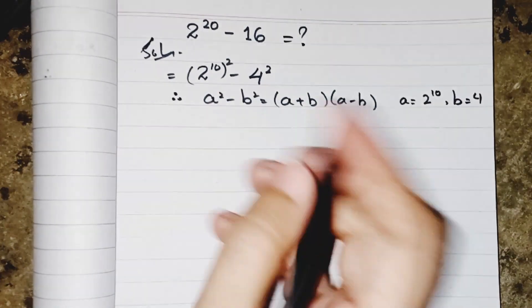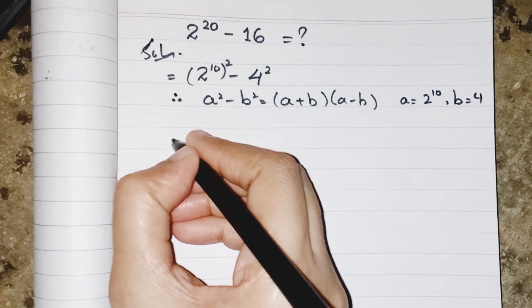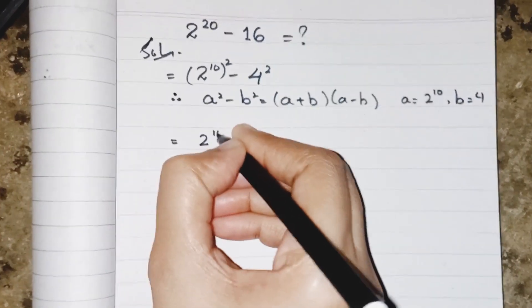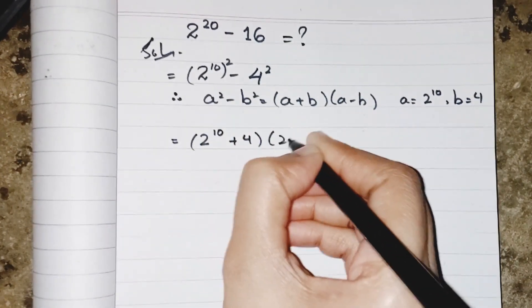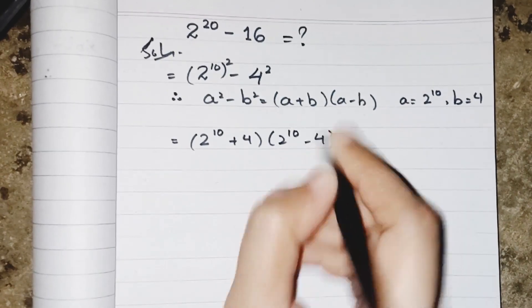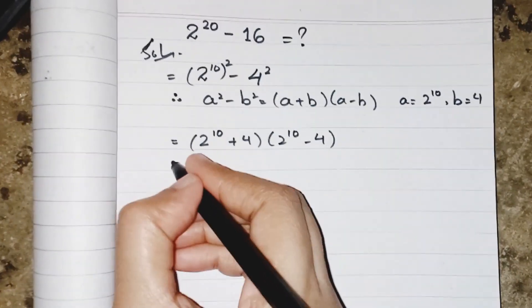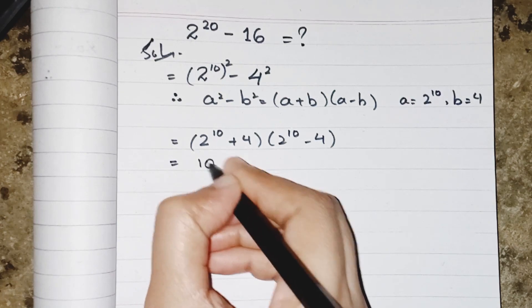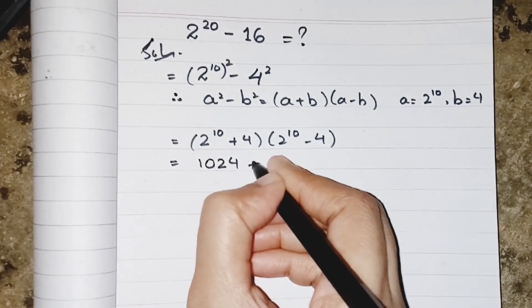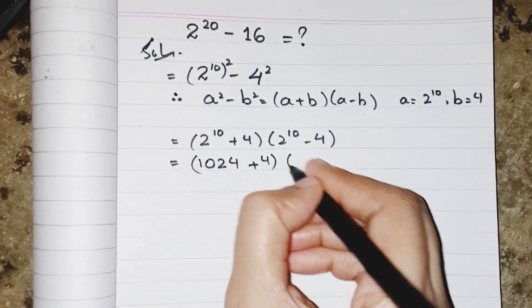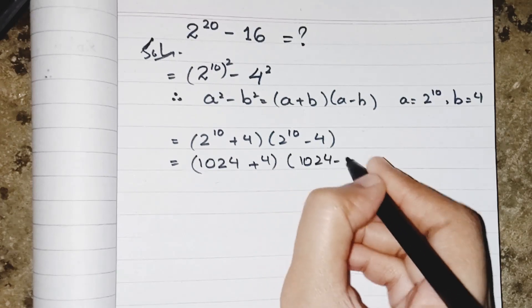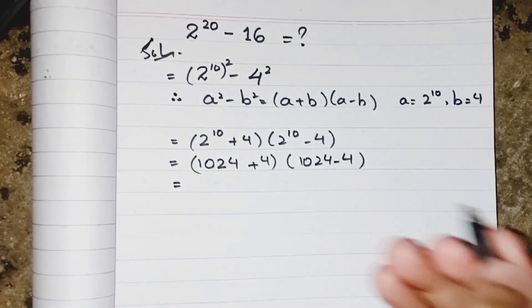So substitute the values into the formula: (2 to the power 10 plus 4) times (2 to the power 10 minus 4). 2 to the power 10 equals 1024, so that's 1024 plus 4 and 1024 minus 4. Just add and subtract them: 1028 times 1020.